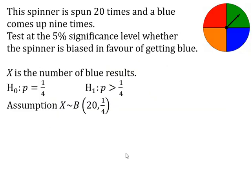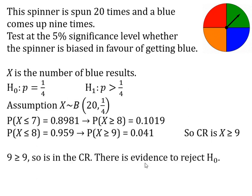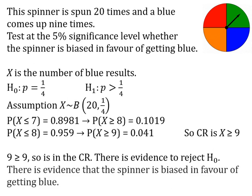Let's go back and think about how we set our working out. We've done the first three steps. We've worked out two probabilities either side of 5%. Write down the P(X ≤ value) results and the corresponding P(X ≥ value) probabilities either side of 5%, then state the critical region. Now we look at the test statistic: blue came up nine times. Is nine in the critical region? Yes — nine is greater than or equal to nine, so it is in the critical region. There is evidence to reject the null hypothesis, meaning there is evidence that the spinner is biased in favour of getting blue.